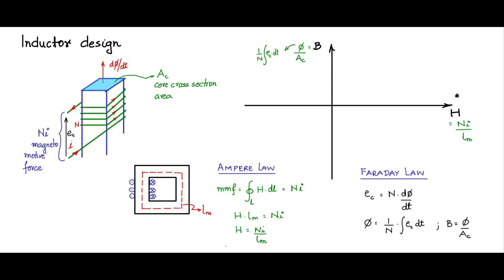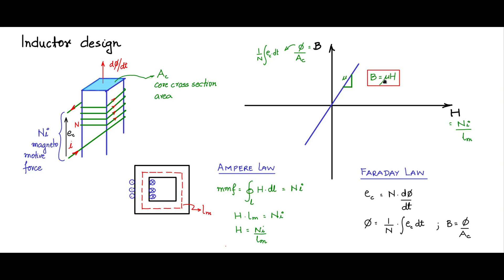If you take this BH axis and take a typical magnetic material — let us say it is ideal — then it will look something like this: a straight line, and it has a slope called μ, mu, which is the permeability. So B = μ·H. This is one fundamental relationship: B = μH, where μ is the permeability which relates the flux density and the forcing field H = NI/Lm.